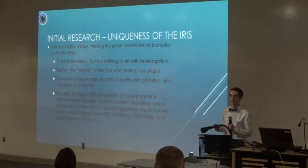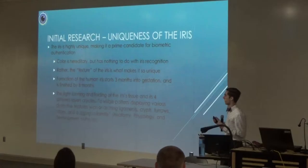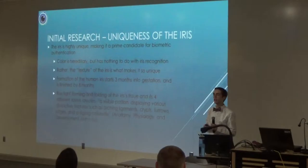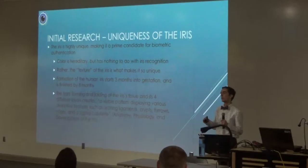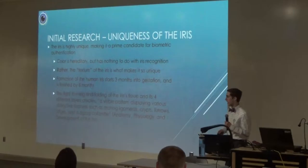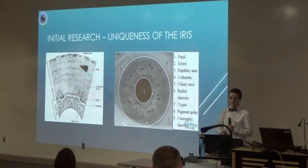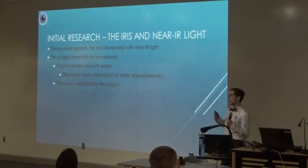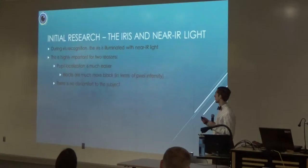Now we're going to talk about some of the initial research. First, I needed to research the uniqueness of the iris. Color is hereditary but has nothing to do with iris recognition - it's the texture of the iris that makes it so unique. It starts to form three months into gestation and finishes by eight months, and all the tight foldings of membranes make a bunch of very unique physical features. For context, the probability of two people having the exact same iris texture is 10 to the power of 80, whereas the estimated number of atoms in the universe is 10 to the power of 78. So it's highly, highly unique.